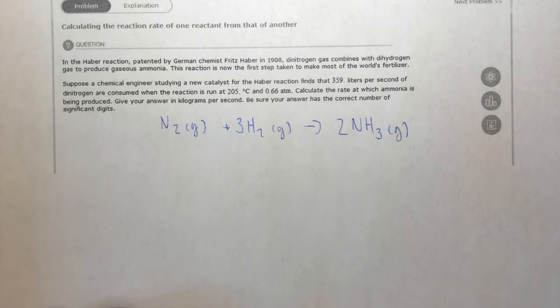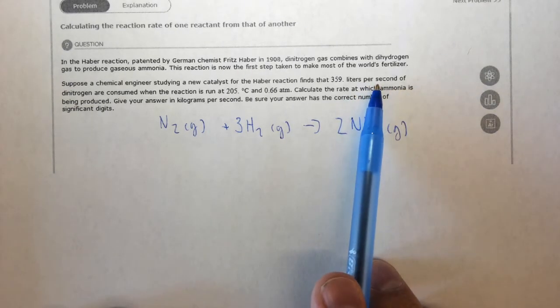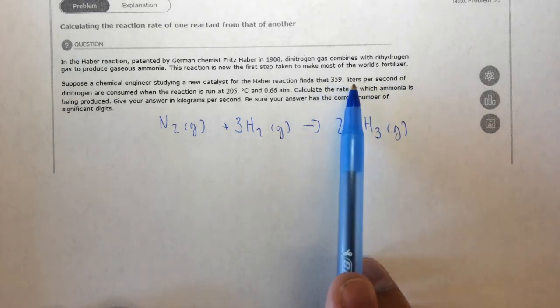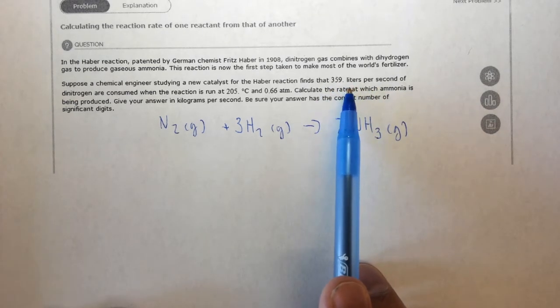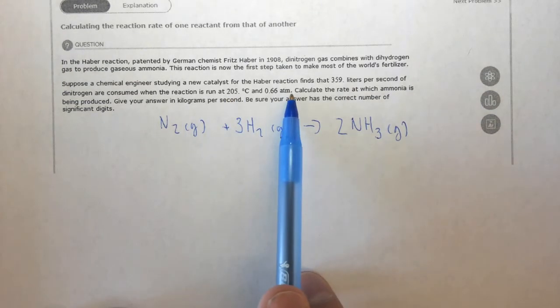One thing to consider here is rate doesn't really make a big difference in how you're going to approach this problem. You are given a volume of nitrogen, as well as a temperature and a pressure. So you know how quickly this is being consumed.